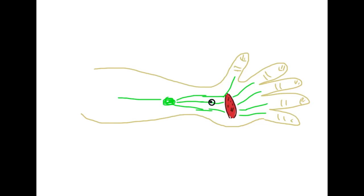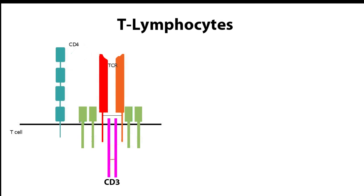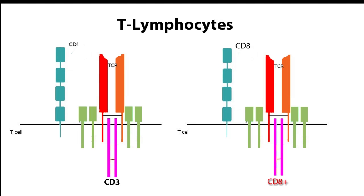Once activated, the professional antigen-presenting cell will migrate from the site of infection to the lymph node. There are several different kinds of T lymphocytes. For the purpose of this video, we will focus on two major groups: CD4-plus T lymphocytes and CD8-plus T lymphocytes.